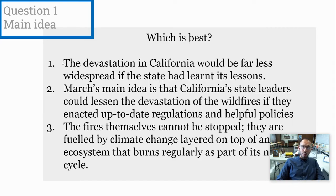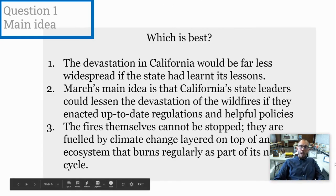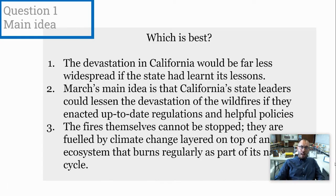Let's take a look based on the wildfire article we looked at. Which is best? Option one: 'The devastation in California would be far less widespread if the state had learned its lessons' — that's copied as the first sentence from the article. Option two: March's main idea is that California's state leaders could lessen the devastation of the wildfires if they enacted up-to-date regulations and helpful policies. Option three: 'The fires themselves cannot be stopped — they are fueled by climate change layered on top of an ecosystem that burns regularly as part of its natural cycle.'